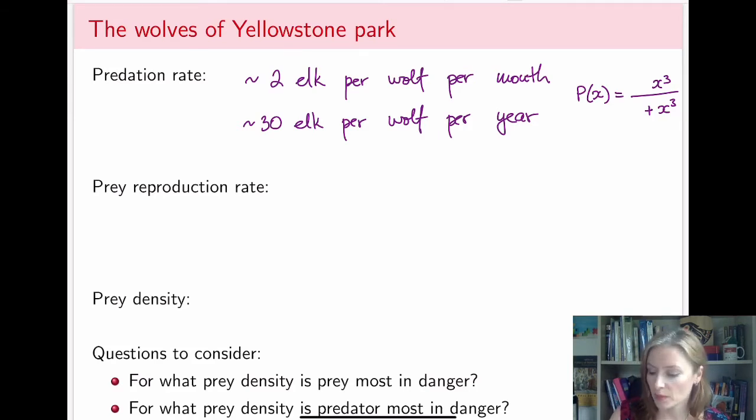So thinking about this, we need the horizontal asymptote to be 30. If we have this coefficient as 1, then 30 has to appear on top here. The second number on the bottom here actually describes the dynamics near the origin for small density of prey.